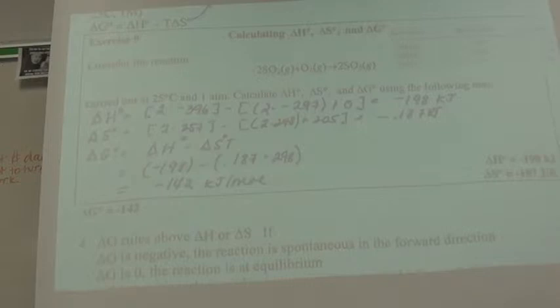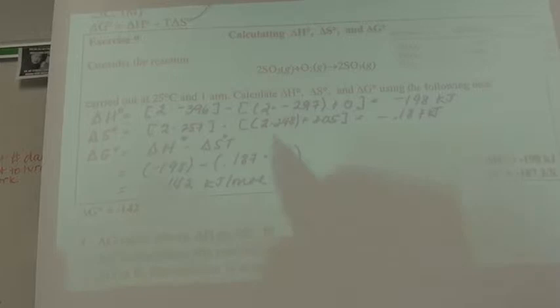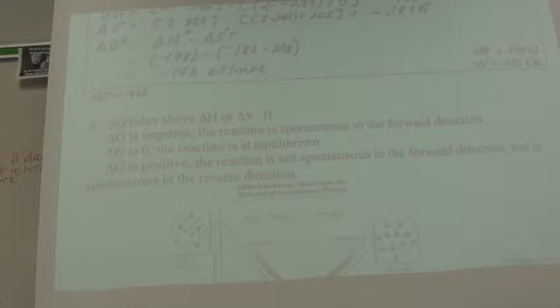And my value for delta G naught is negative 142 kilojoules per mole. Since this is a negative value, it is spontaneous in the forward direction. Shouldn't that 0.187 be a negative? Yeah, thank you. So delta G rules above everything else.